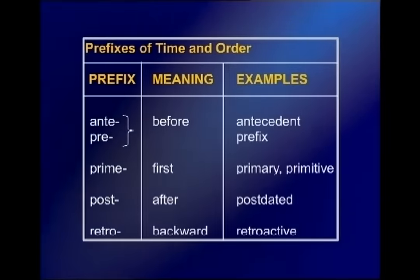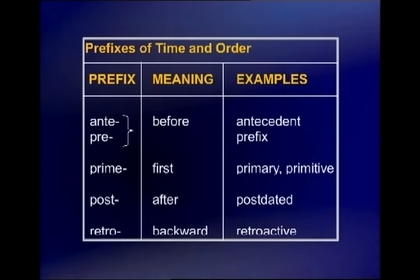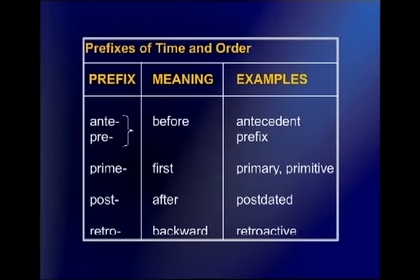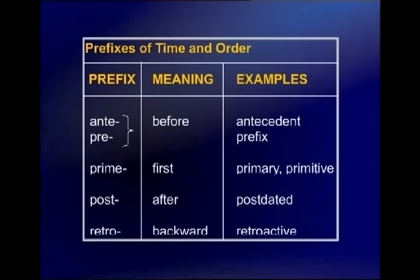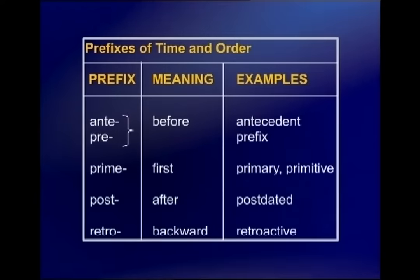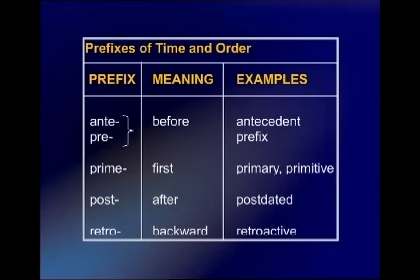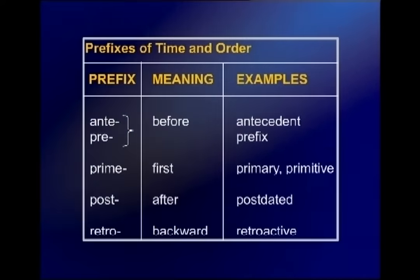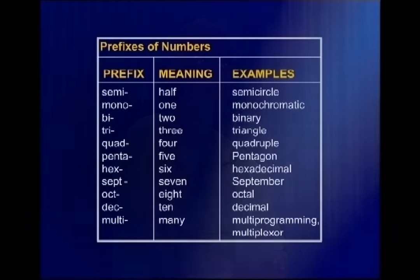For prefixes of time and order: 'ante' (a-n-t-e) and 'pre' (p-r-e) both mean before — for example, 'antecedent' means something that comes before or happened earlier. 'Prim' means first, as in 'primary' and 'primitive'. 'Post' means after, like a post-dated check. 'Retro' means backward, as in 'retroactive'. For prefixes of number: 'semi' means half, 'mono' means one (monochromatic), 'bi' means two (binary), 'tri' means three (triangle, tripod), 'quad' means four (quadrangle), 'penta' means five (pentagon — that famous building in Washington).